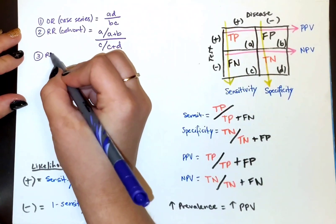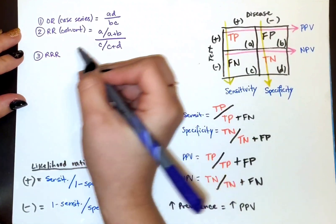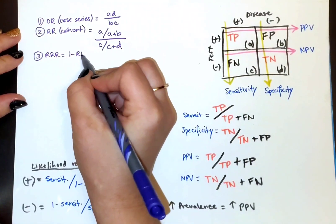Third, just know that relative risk reduction is just going to be one minus relative risk.